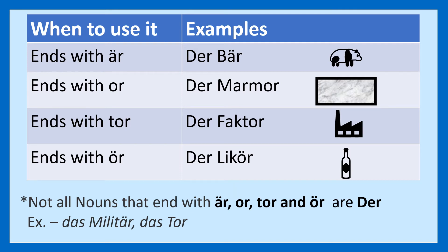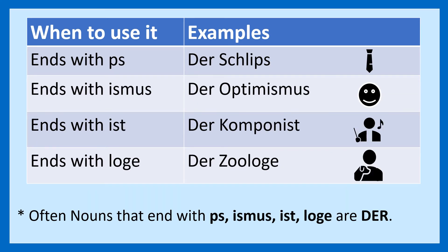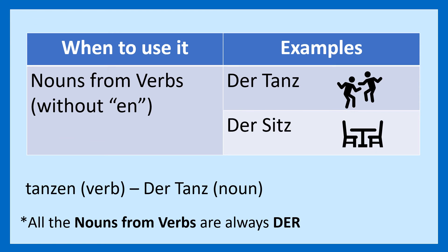Ends with -ö: der Likør. Ends with -er: der Frisør. Ends with -ner: der Kellner. Ends with -iker: der Politiker. Ends with -of: der Apostof. Ends with -ps: der Schlips. Ends with -ismus: der Optimismus. Ends with -ist: der Komponist. Ends with -loge: der Zuloge. Also, nouns which come from verbs without -en: der Tanz, der Sitz. For example, tanzen is the verb and der Tanz is the noun — you remove the -en and capitalize the first letter.